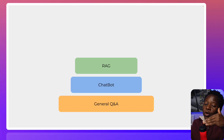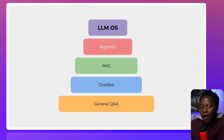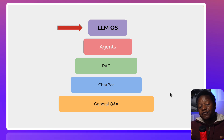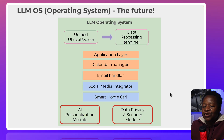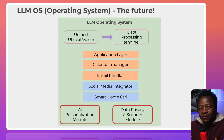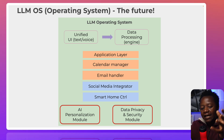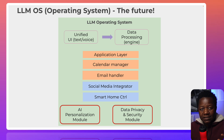So we've gone up the pyramid: General QA, Chatbots, RAG, Agents. Now the top: LLM OS. The idea is simple — it's a futuristic concept of looking at the large language model as the center hub of an operating system. We can use multi-modality — not just text, but images, videos, and so forth — as well as multi-agents, to create a hub that reminds us of an actual computer operating system.